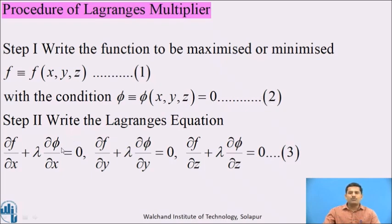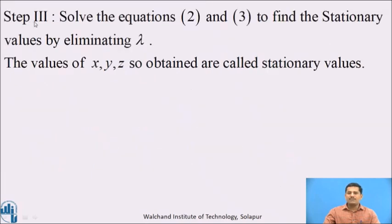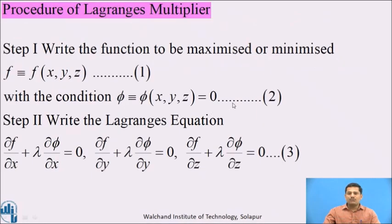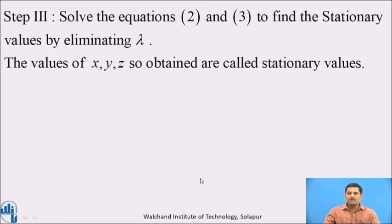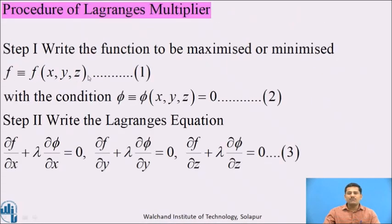In step number 2, we consider three equations which are called Lagrange's equations — call them equation number 3. Step number 3 is to solve these equations for the values of x, y, z by eliminating lambda. Once we eliminate lambda and get the values of x, y, z, those values are called the stationary values of the given function 1.